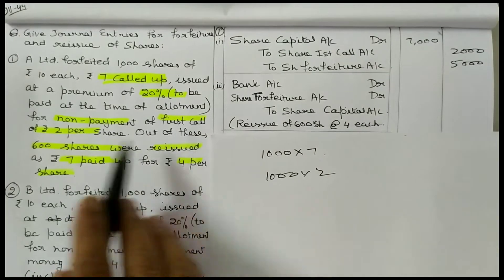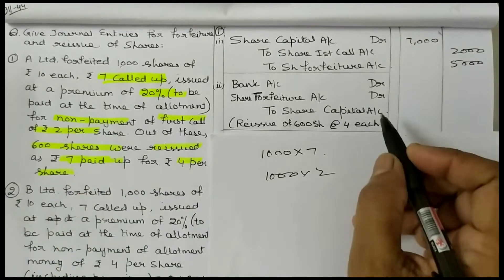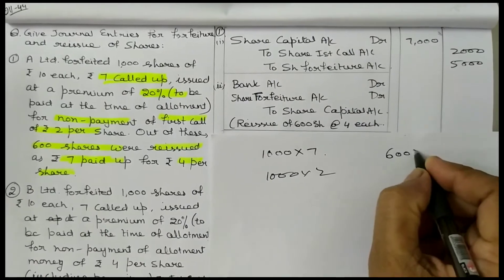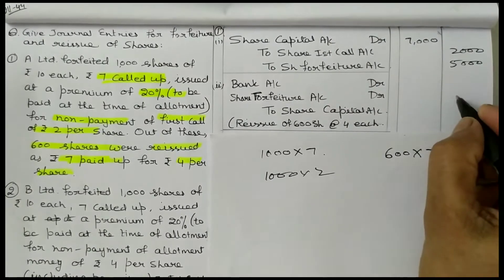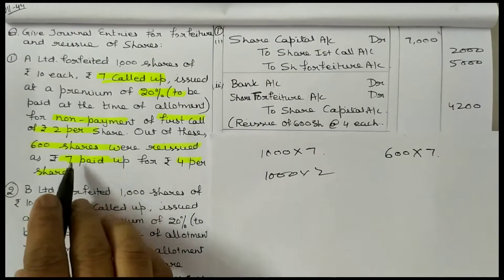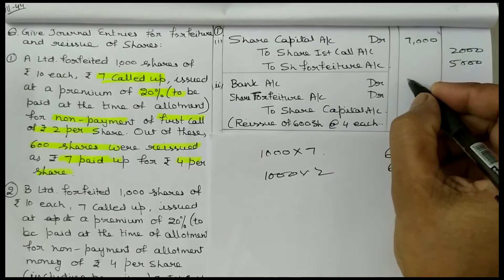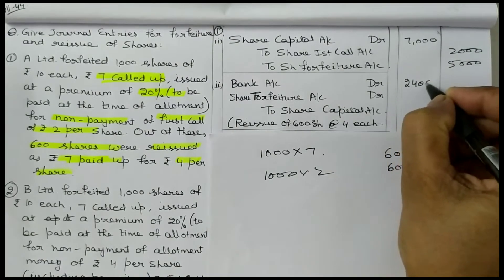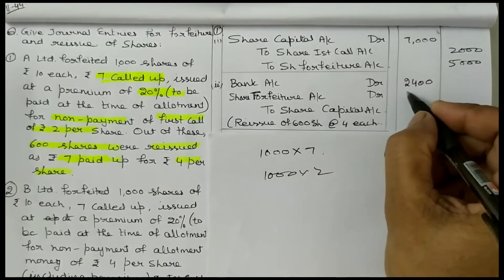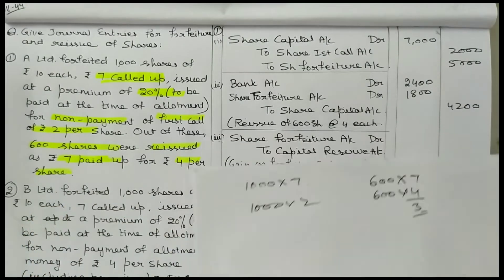Next: out of these, 600 shares were reissued at ₹7 paid up. Paid up capital is always shown in share capital account at the time of reissue, so 600 × ₹7. These were issued at ₹4 per share, so 600 × ₹4. And ₹7 minus ₹4 = ₹3, so 600 × ₹3 = ₹1800 to be shown here — you have to transfer the forfeited amount to capital reserve.